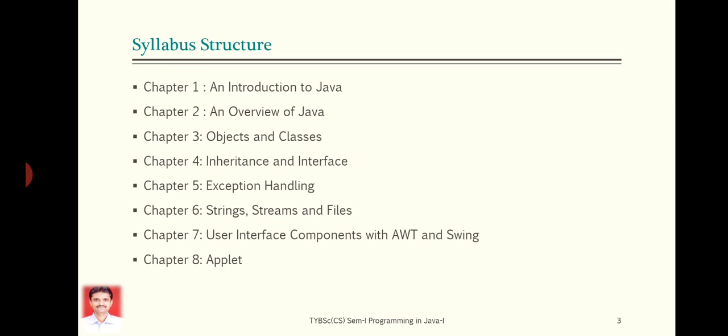Next chapter, strings, streams and files. It covers string class. String is one of the classes available in Java. How to use those classes in our program. Additionally, another string buffer class will also be covered here. Then file class, how to do file handling with help of streams. There are mainly two types of streams: byte streams and character streams. Those will also be covered in this chapter.